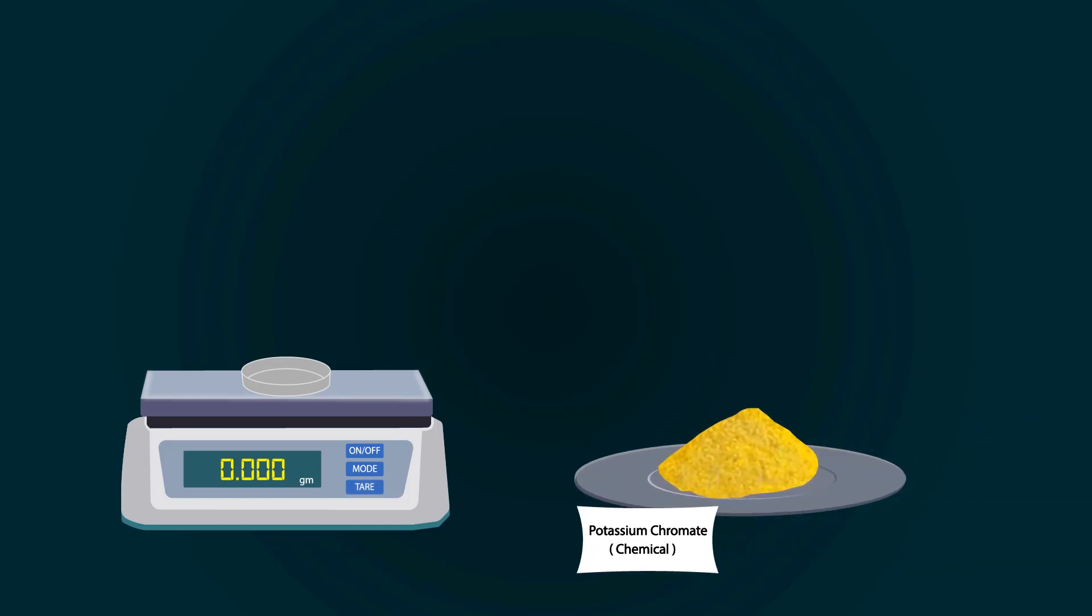Now take potassium chromate chemical from the stock bottle. Put potassium chromate chemical into the petri dish with the help of a spatula. Weigh precisely up to 10 grams.